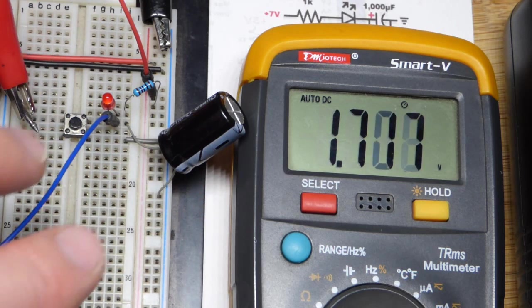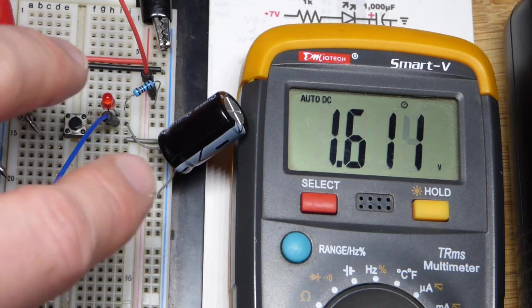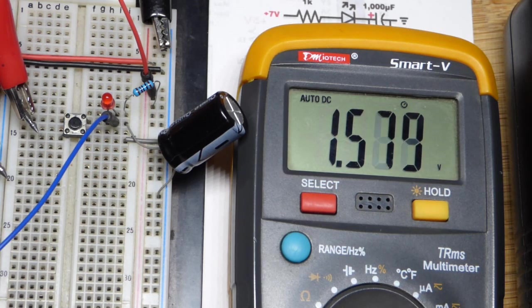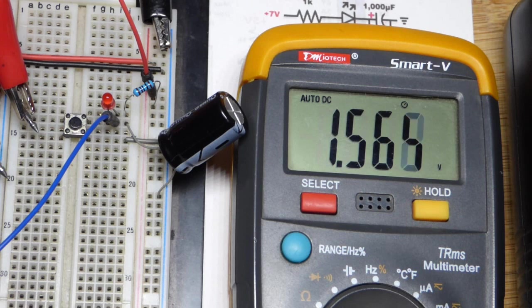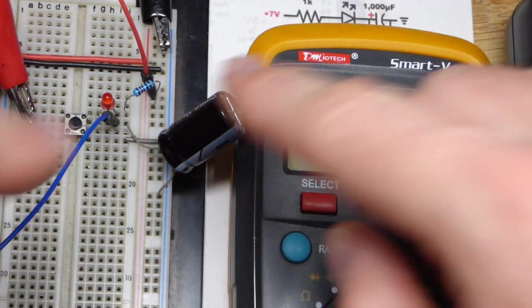But when we get the capacitor fully charged, basically all the voltage is now across 2 again, right there. But in any case, understanding voltages, it's going to stop at about 1.5.